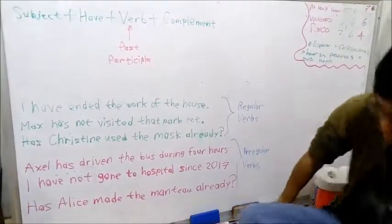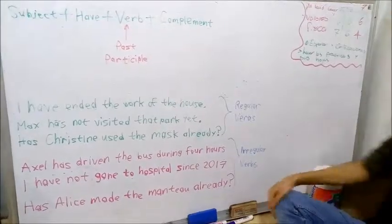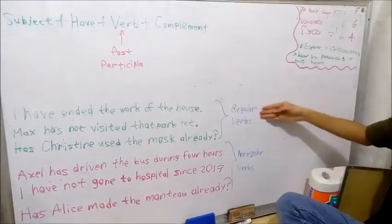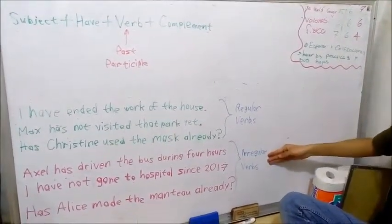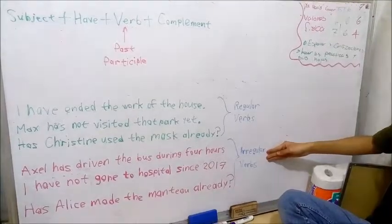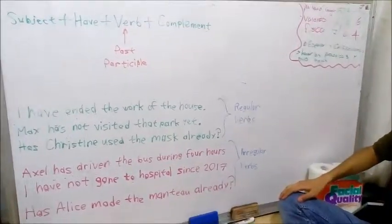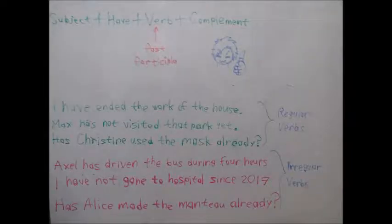Here we have some examples of the regular verbs and the irregular verbs. And that's all for now. My name is Juan Carrillo Costa, and this has been the present perfect.